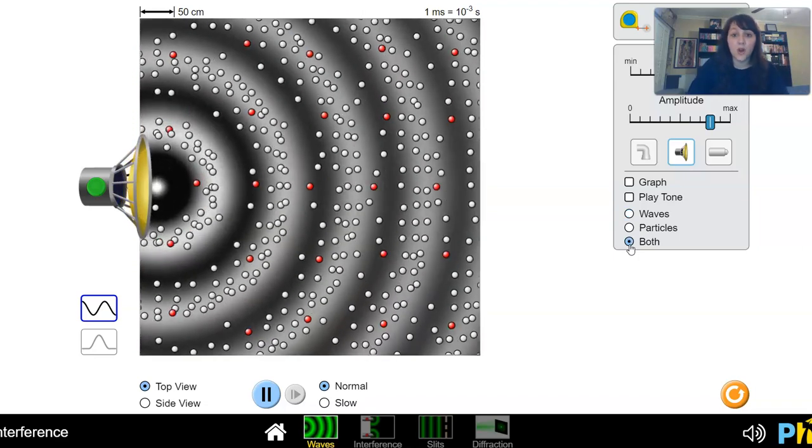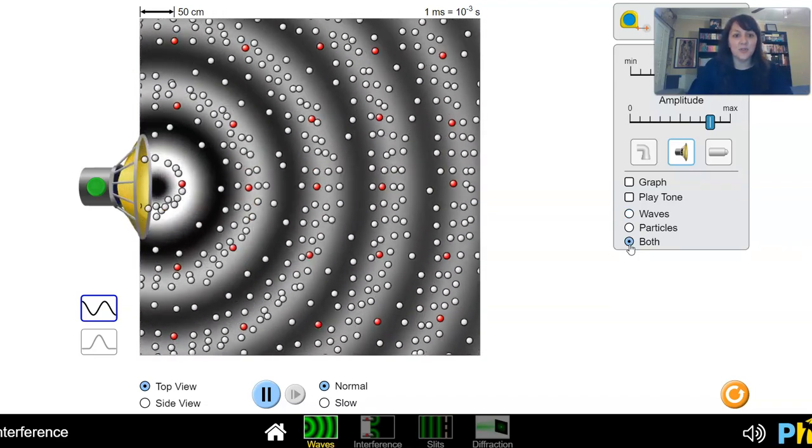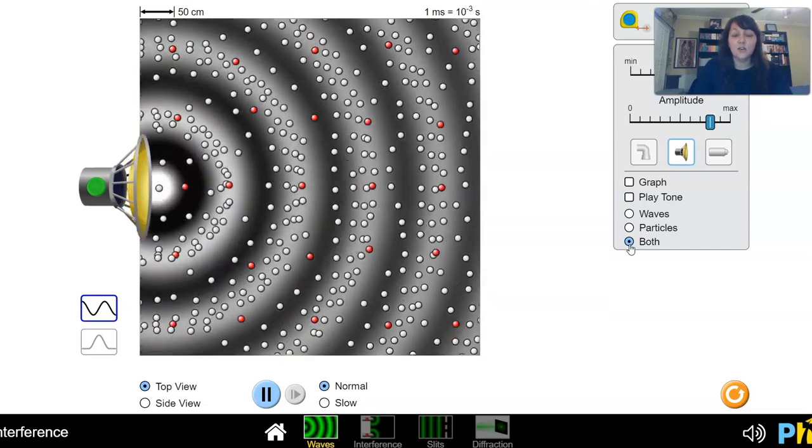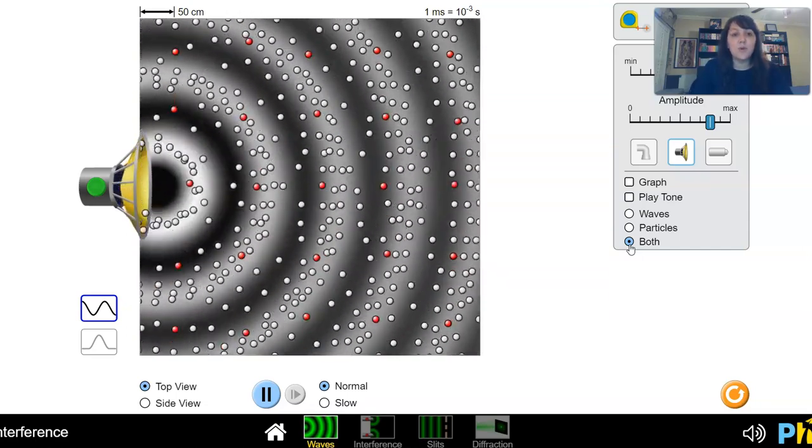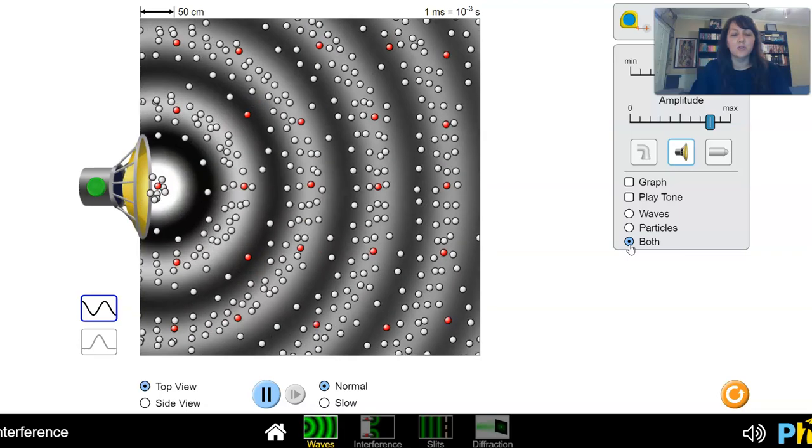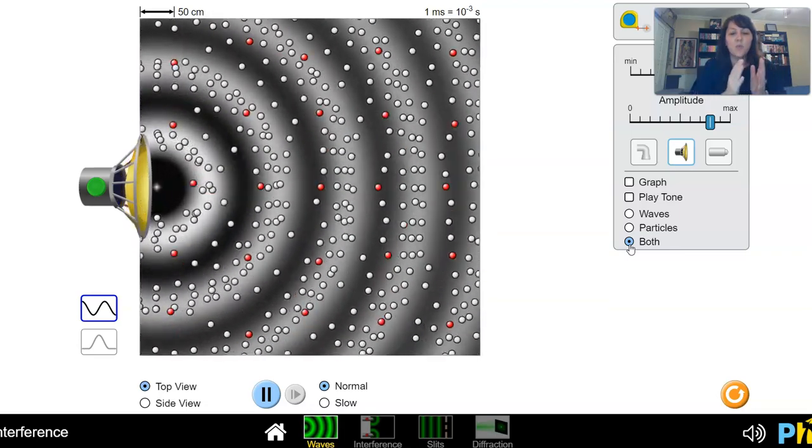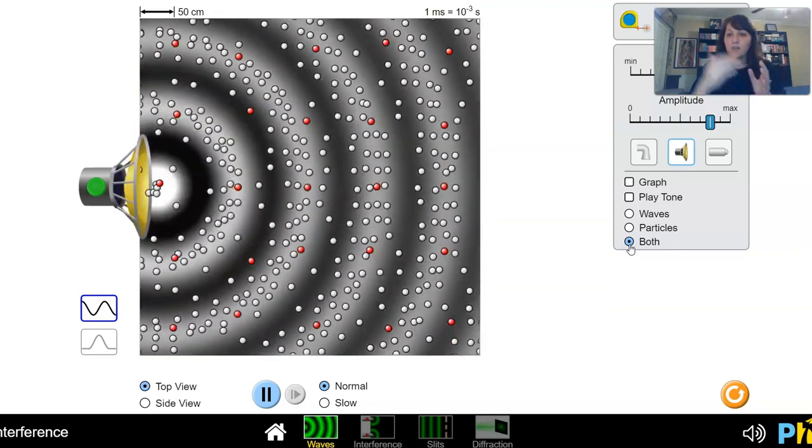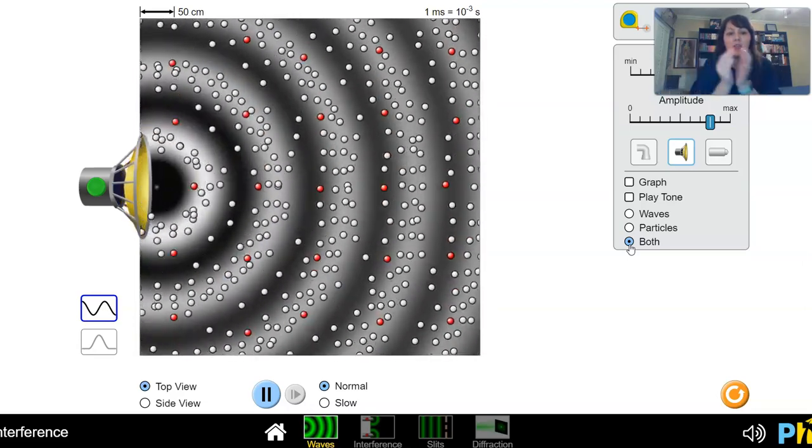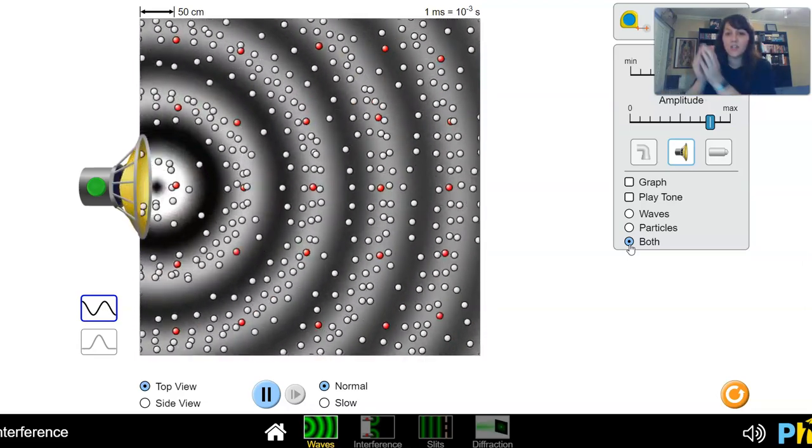I'm going to go ahead and superimpose on this image, a diagram, a model of what the particles are doing as a result of this. So this looks like crazy, right? But if you look at what's happening with the particles, you see that in the places where we have those, the white wave fronts coming out there, that's where our particles tend to be all bunched together.